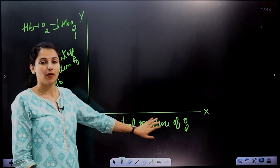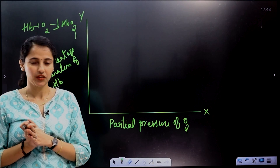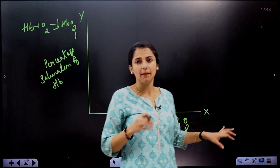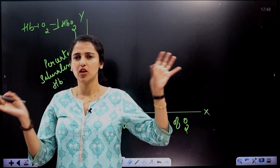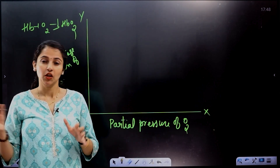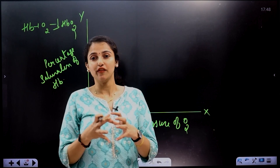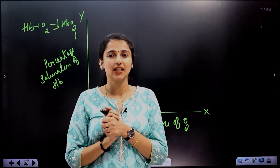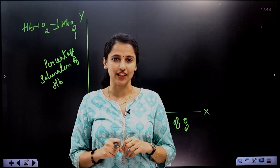We are now looking at partial pressure of oxygen. We don't have pure oxygen in the atmosphere — there are a lot of gases. In a mixture of gases, we talk about the partial pressure of each gas.